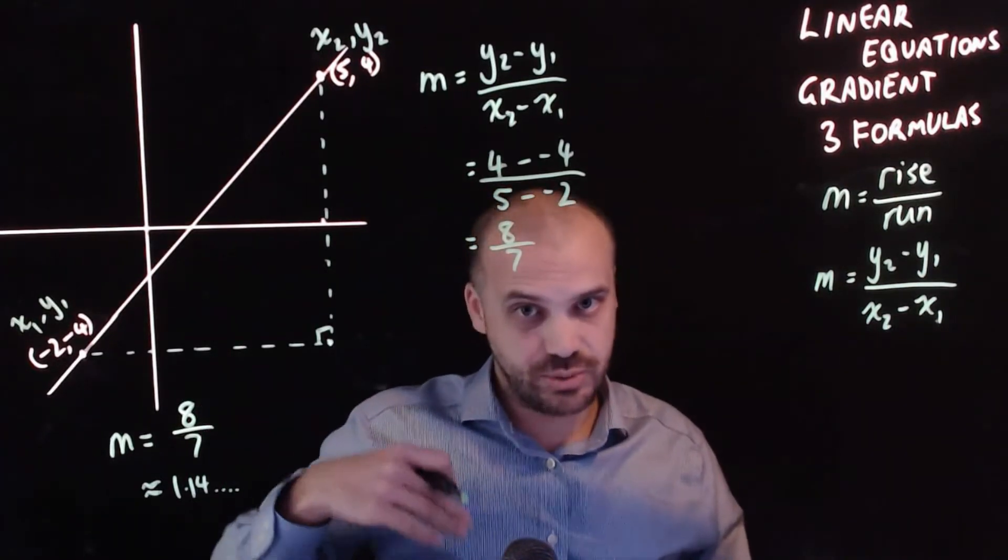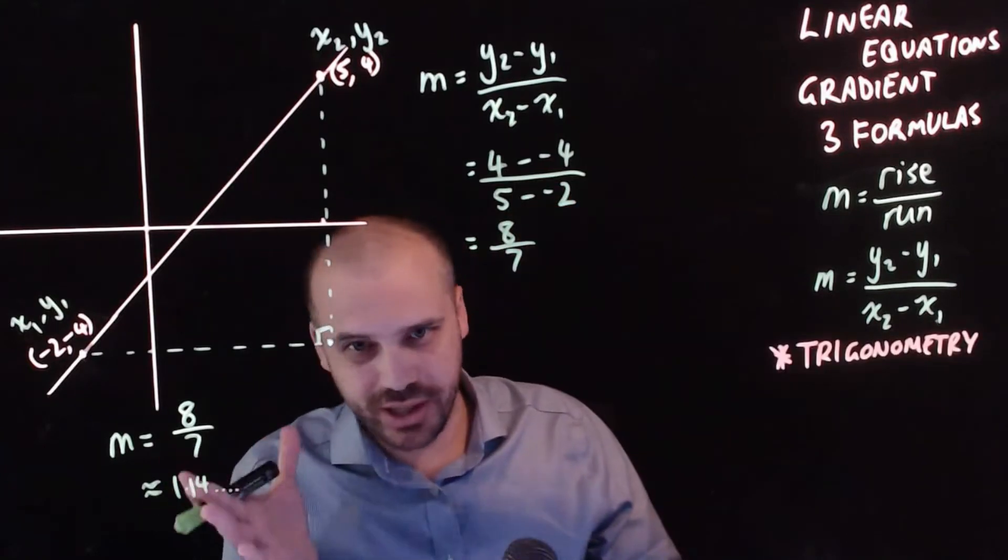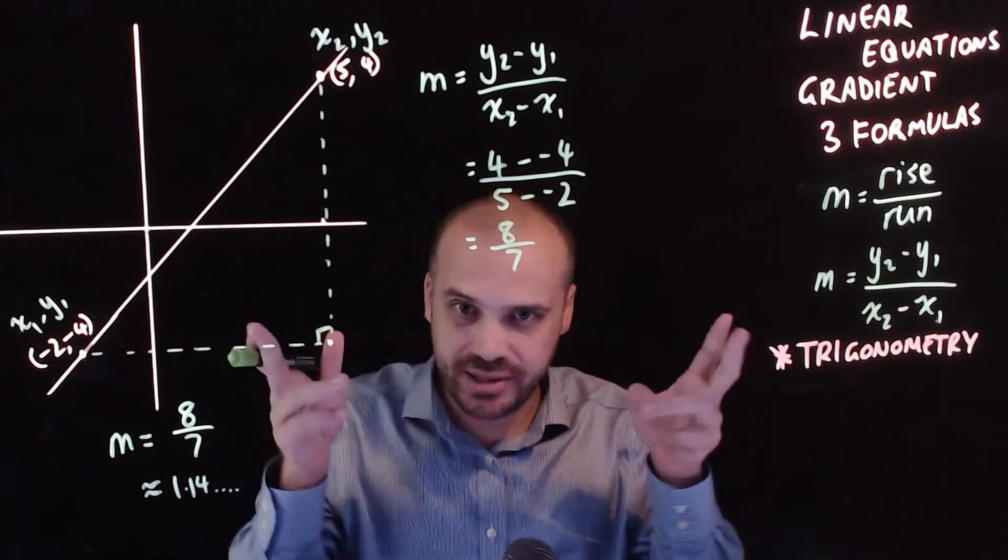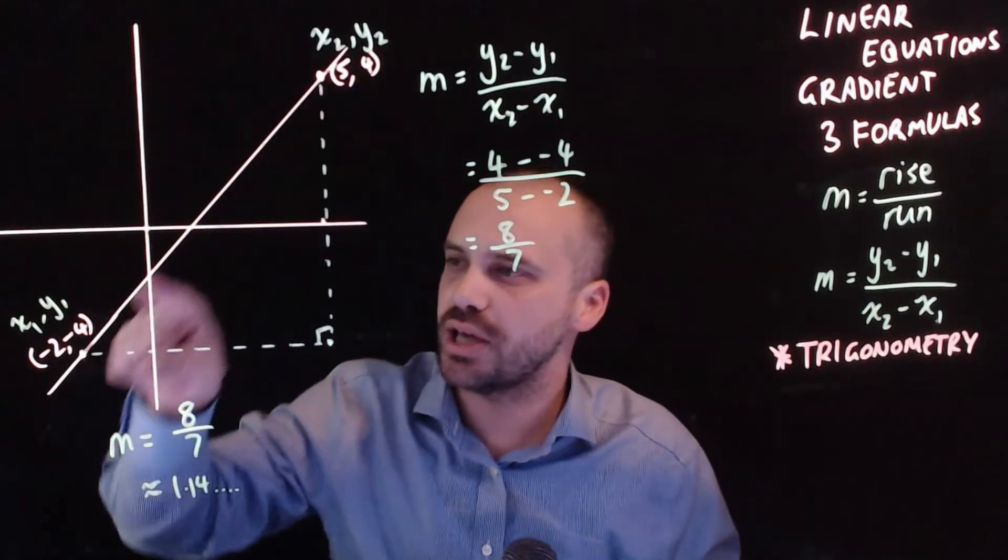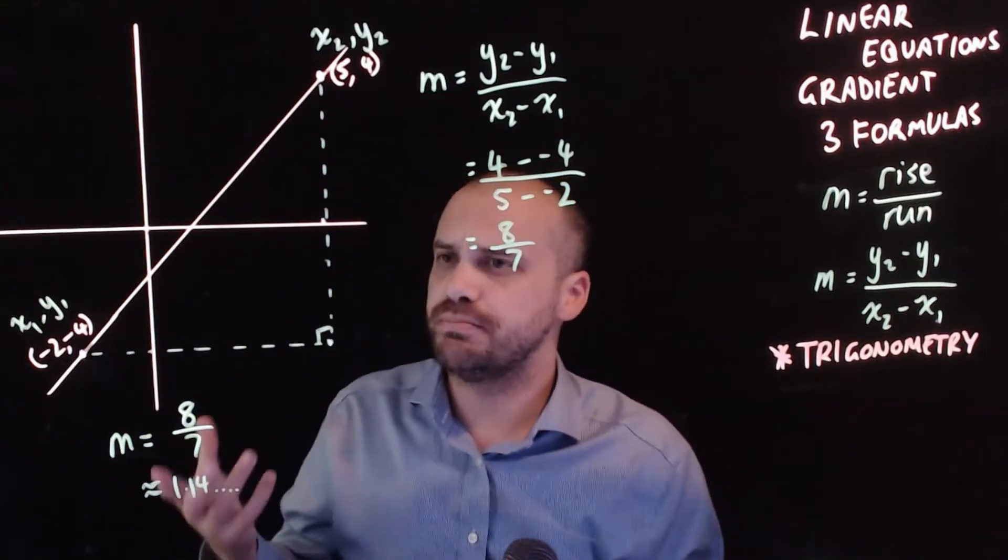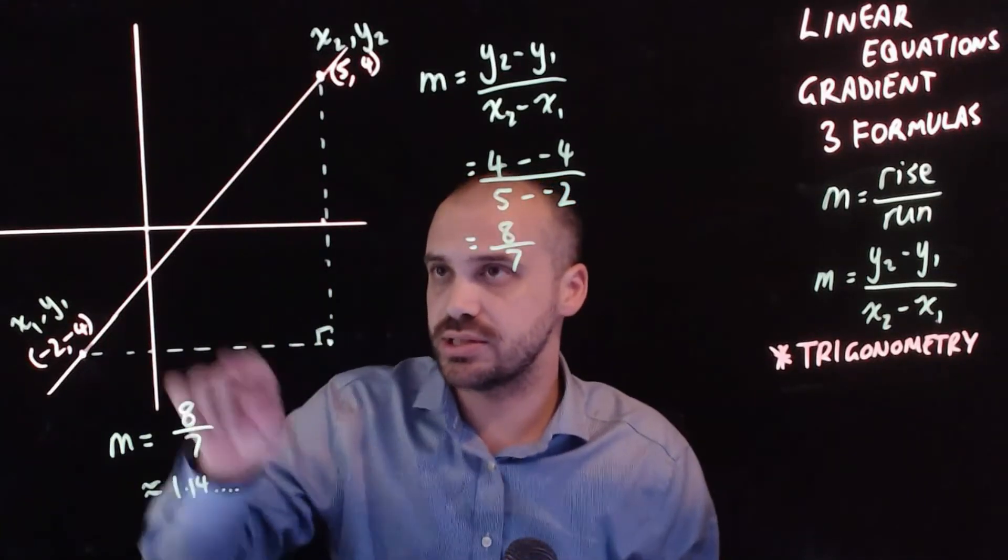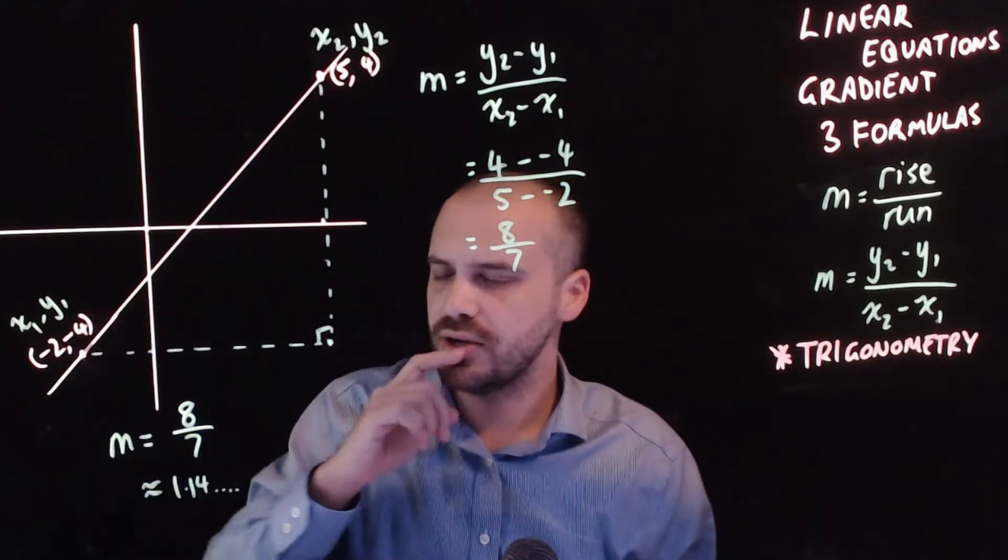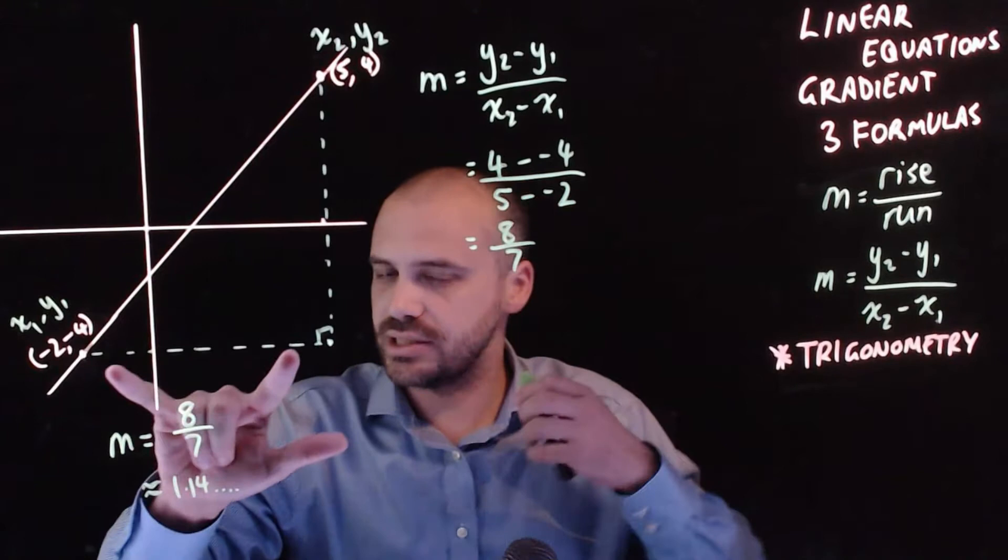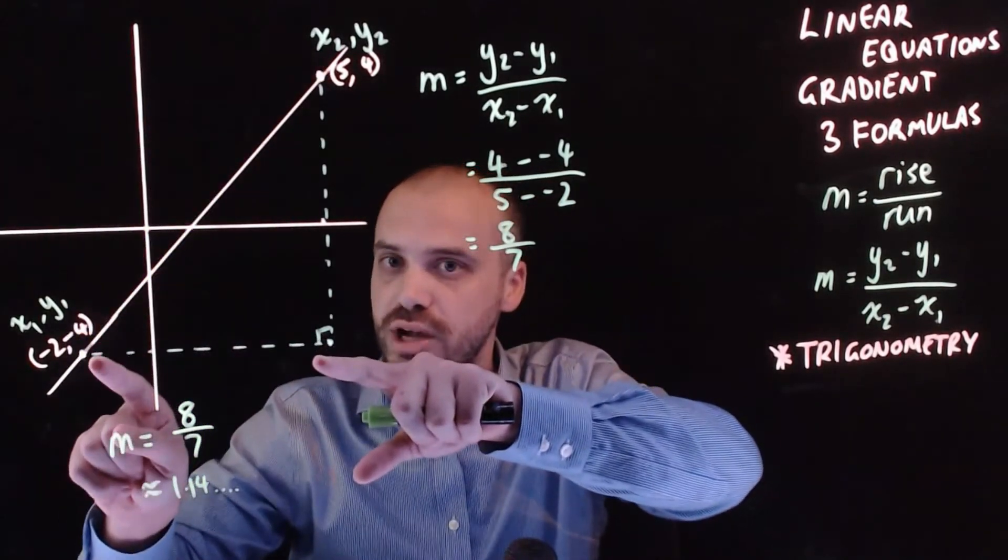And now we're going to get to our third formula. So before I come right out and say the formula, trigonometry is our hint and it's the space that we should be thinking in. We have a right angle triangle here. Now look at what we did both times when it came to this triangle here. We did this length over this length here.